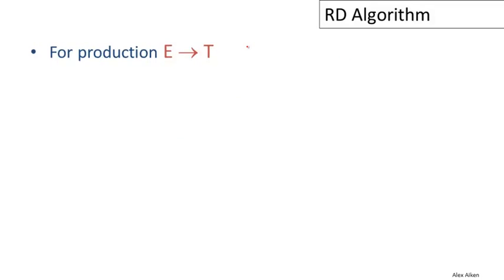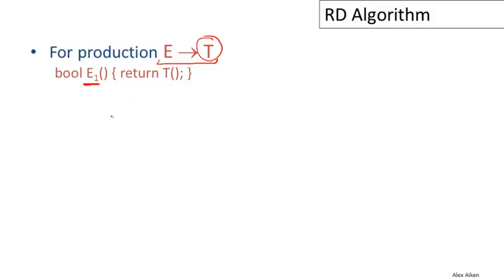Now let's see how this works for some specific productions, using the same grammar from the last video. The first production is E → T. We write the function E1, which deals with the first production for E and returns true only if this production succeeds. E can only match some input if some production of T matches the input, and we have a function T for that — which tries all the different productions for T. So E1 returns true exactly when T returns true.